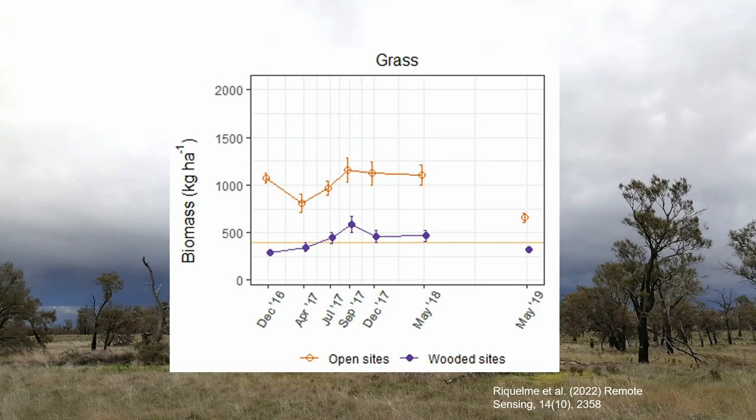What we found was that the wooded vegetation types — shown here — are really forage stressed. There's not much grass growing, especially in summer and autumn, those December-to-April months. You can see the orange line representing the purported switch threshold, at which point kangaroos will start eating shrubs and tree seedlings. In the drier months, grass biomass is really likely to fall below that threshold, which is when seedlings are probably going to be eaten.